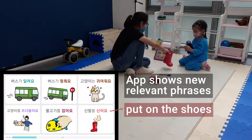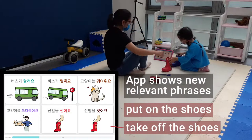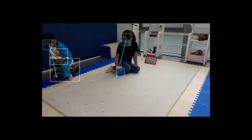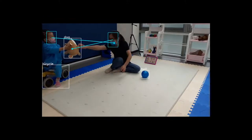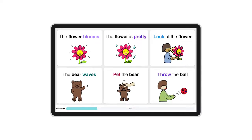This enables parents to reference diverse and relevant phrases while staying focused on the interaction. To understand context in real time, Captivate uses multimodal information. Using speech only, like prior systems, is restrictive, as young children cannot communicate clearly. In addition to natural language, Captivate uses gaze and scene information to estimate which toys are being focused on during play. Based on the context, it recommends phrases for the parent to use while playing with the child.